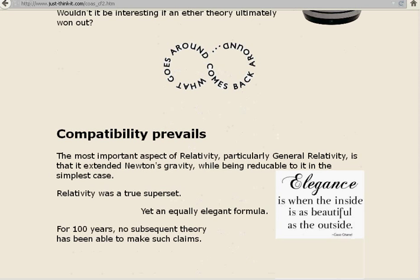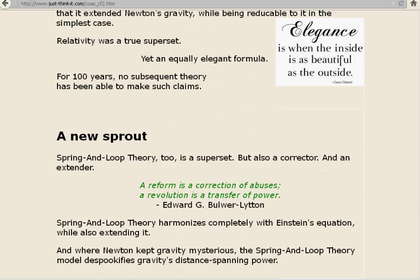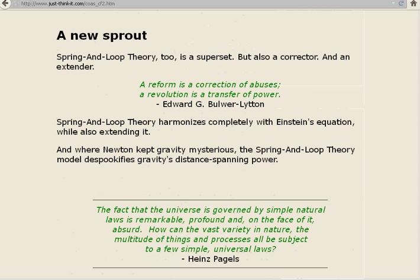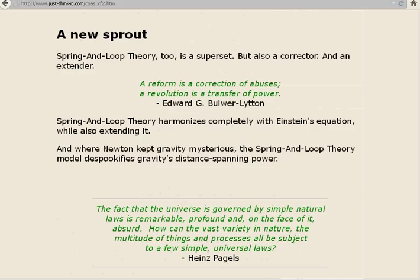A new sprout. Spring and loop theory, too, is a superset, but also a corrector and an extender. A reform is a correction of abuses. A revolution is a transfer of power. Edward G. Bulwer-Lytton. Spring and loop theory harmonizes completely with Einstein's equation, while also extending it. And where Newton kept gravity mysterious, the spring and loop theory model de-spookifies gravity's distance-spanning power. The fact that the universe is governed by simple natural laws is remarkable, profound, and on the face of it, absurd. How can the vast variety in nature, the multitude of things, and processes all be subject to a few simple universal laws? Heinz Pagels.